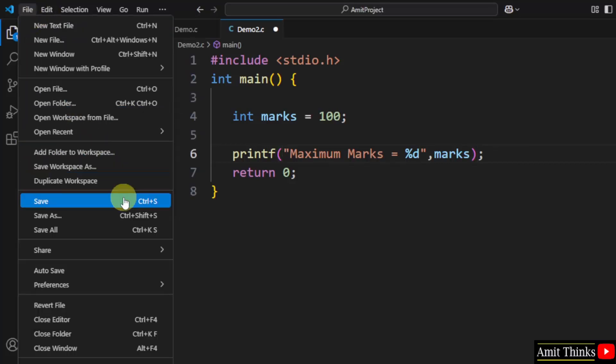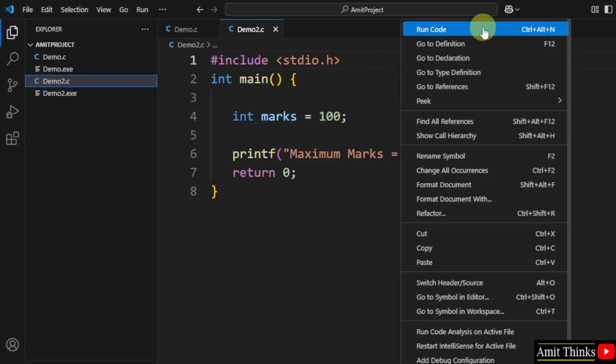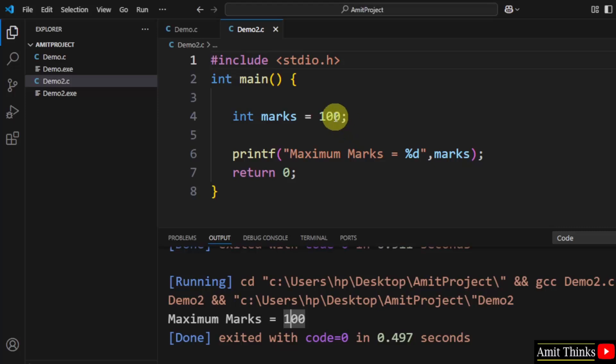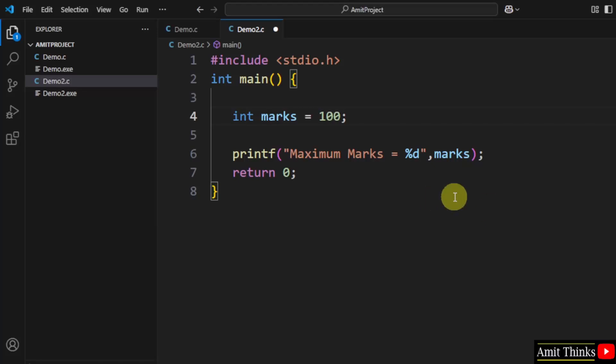Now it will print. Go to file, click save, right-click and run code. It printed the value 100. If you added 10, it would have printed 10. We have printed the marks value. In this way, we can work with variables in C language. Go to file and save. Thank you for watching the video.